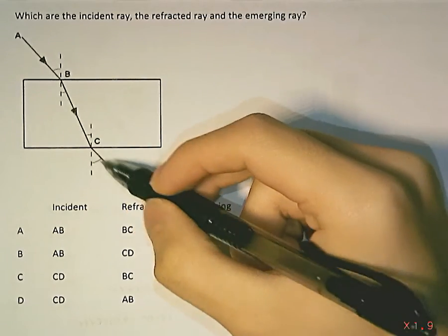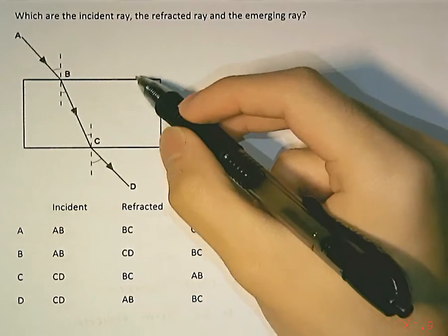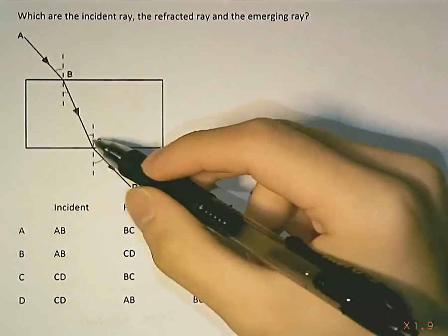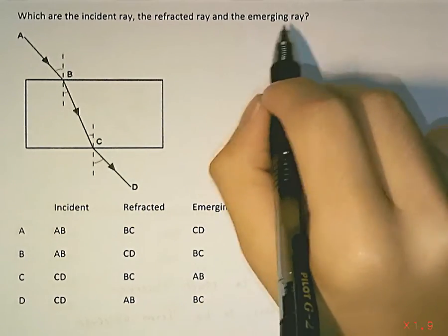And this one over here, because it's coming out of your material, this rectangular block here, that is going to be your emerging ray.